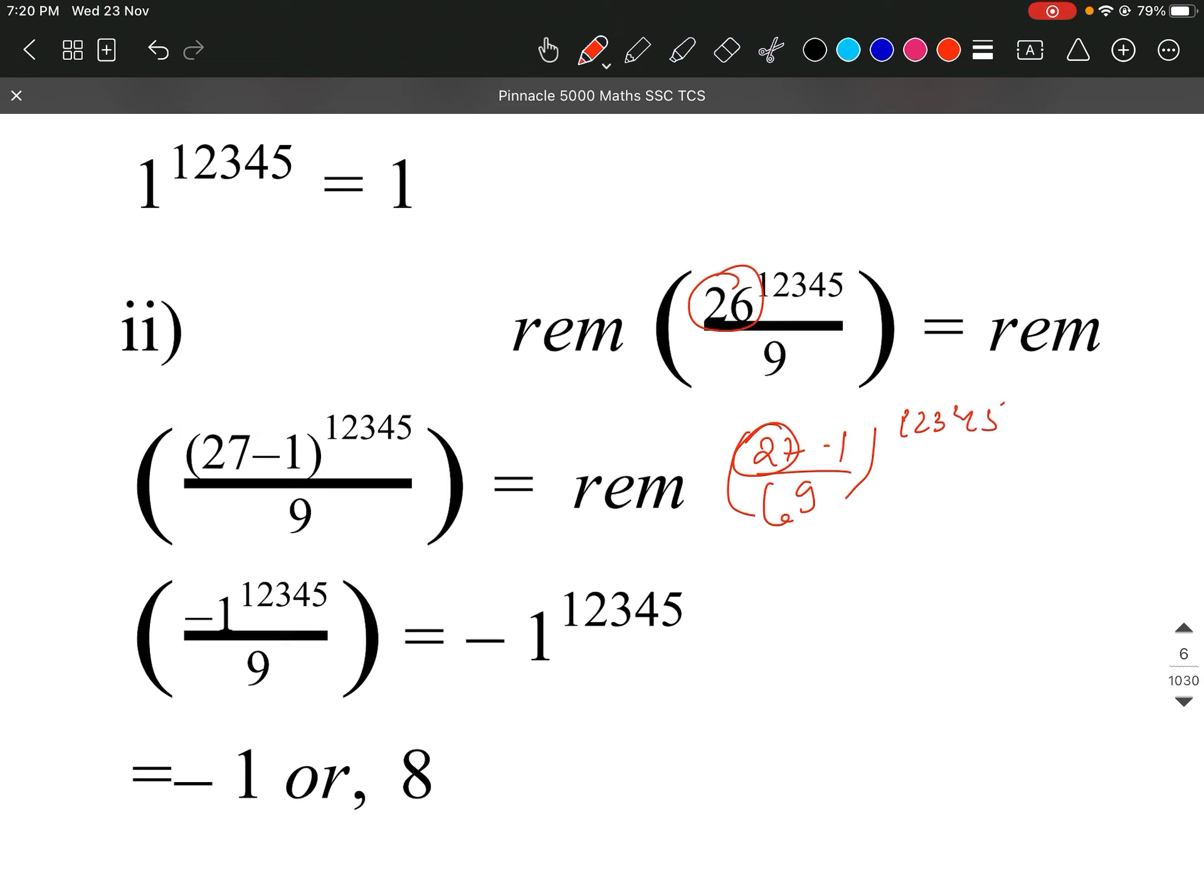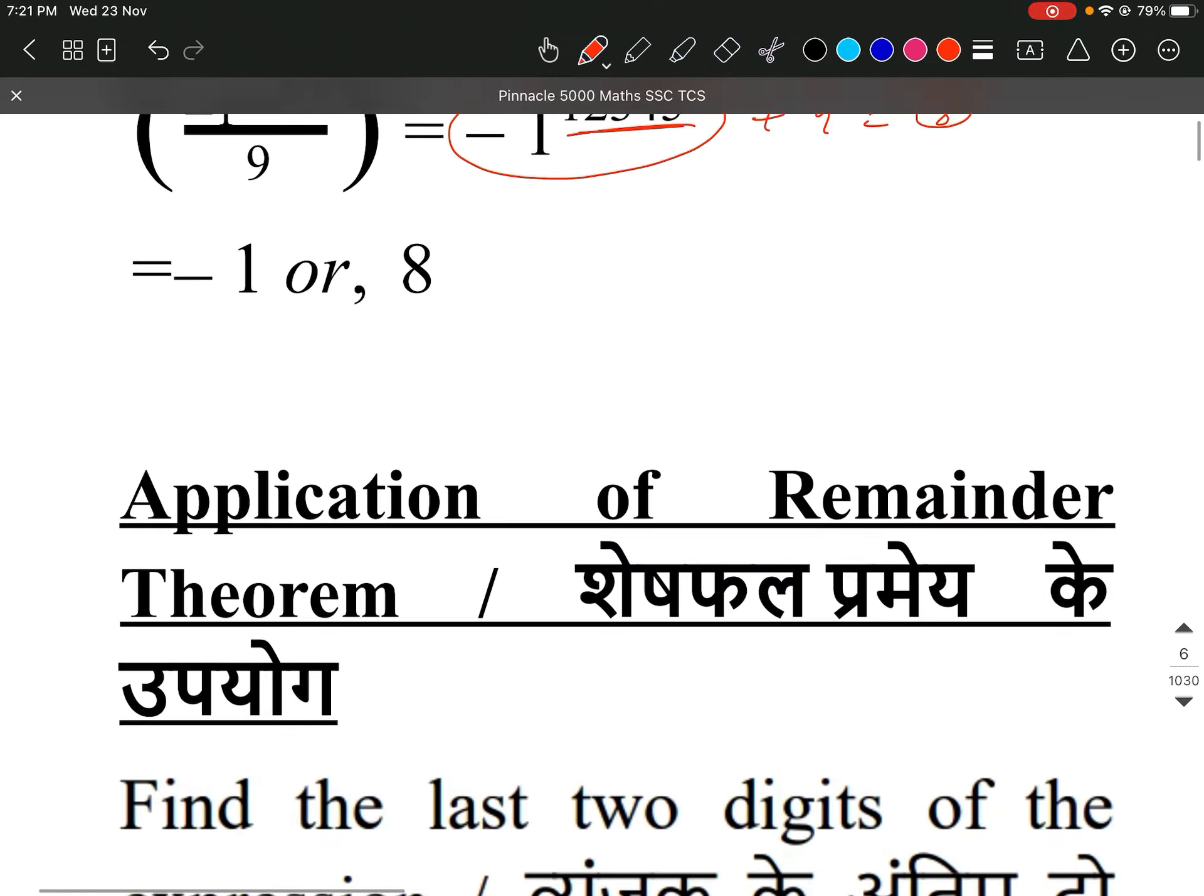Now minus 1 is a remainder. What will happen? So there will be more power. So if we want to do minus 1, then what do we do? Plus 9, then the answer will be 8.